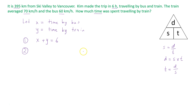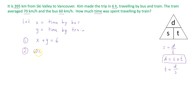We're going to use the formula distance equals speed times time. So the distance the bus traveled is the speed of the bus, 60, multiplied by the time x. Plus the speed of the train, 70, multiplied by the time on the train, y. That equals the total distance of the trip, 395. So our second equation is 60x plus 70y equals 395.